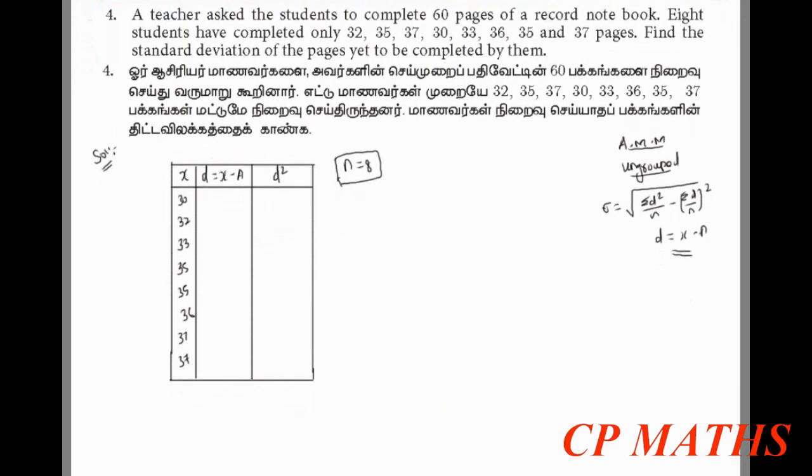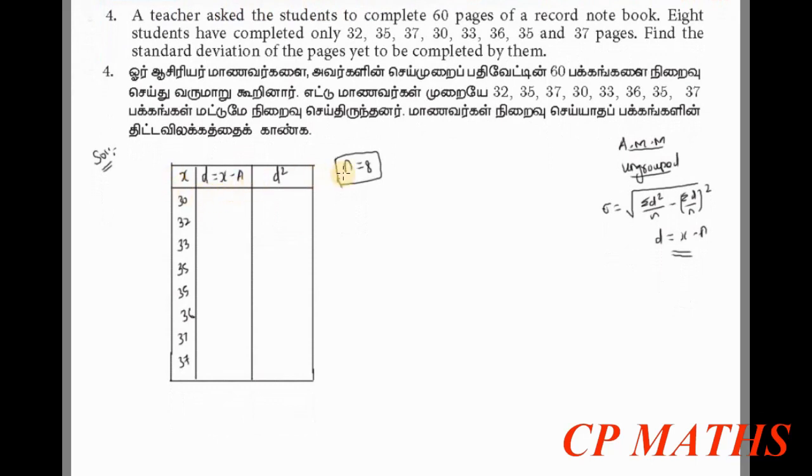Now we need to substitute into the formula. We need d equals x minus a. First, we choose the value of a, the assumed mean. It's very simple - we look at whether we have odd or even number of values. We have 8 values, which is even, so we take the middle two values. For the assumed mean, we can choose any value. Let's take a equals 35 to make calculations easier.